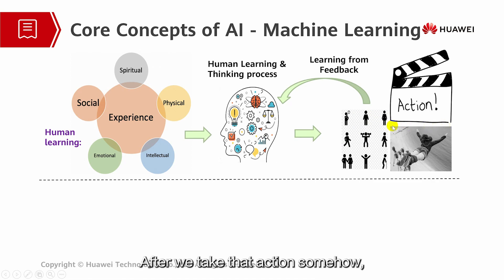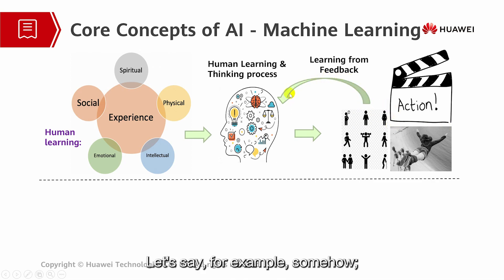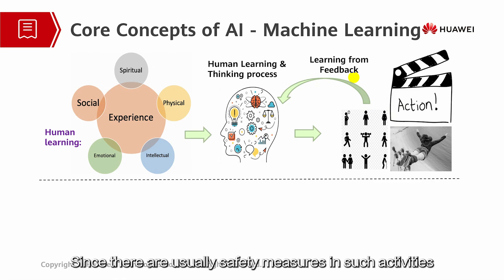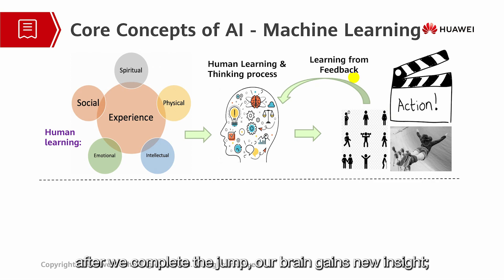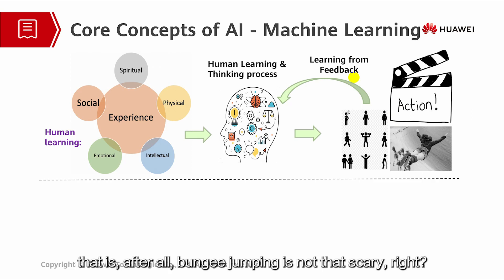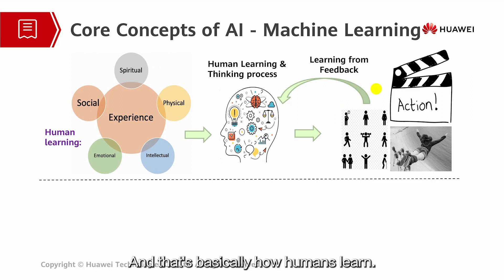But that's not all. After we take that action somehow, our brain also learns from feedback. For example, somehow we manage to do that bungee jumping. Since there are usually safety measures in such activities, after we complete the jump, our brain gains new insight — that, after all, bungee jumping is not that scary. And that's basically how humans learn.